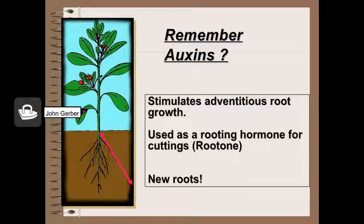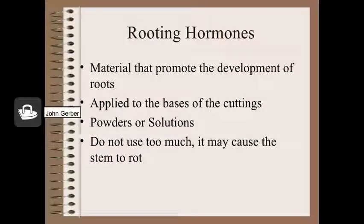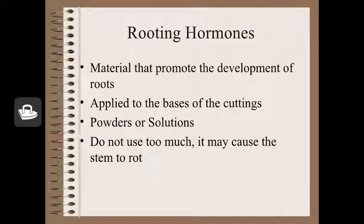Rooting hormones promote the development of new roots. They're used to increase the percentage of cuttings that actually take root and are successful. The cuttings of some plants root easily and may not need a hormone; however, even these plants will root more quickly and uniformly if treated with Hormodin or Rootone. The hormones are applied to the base of the cuttings — they can be powders or liquids. You'll need a very small amount; if you use too much, it may cause the stem to rot and prevent root formation.